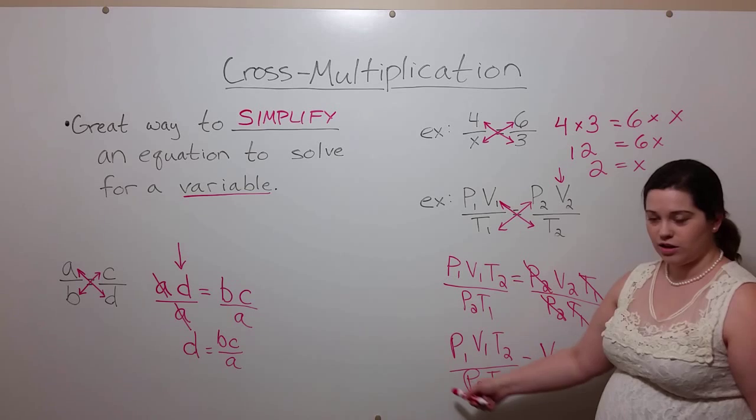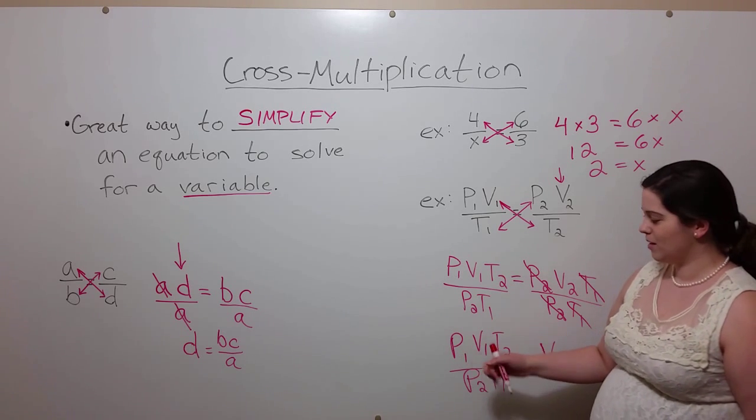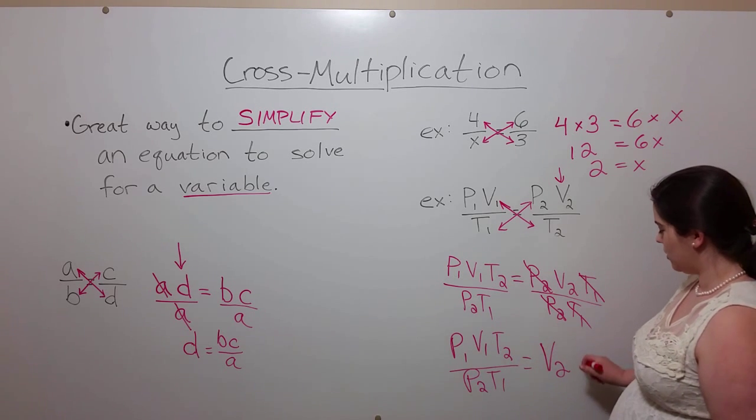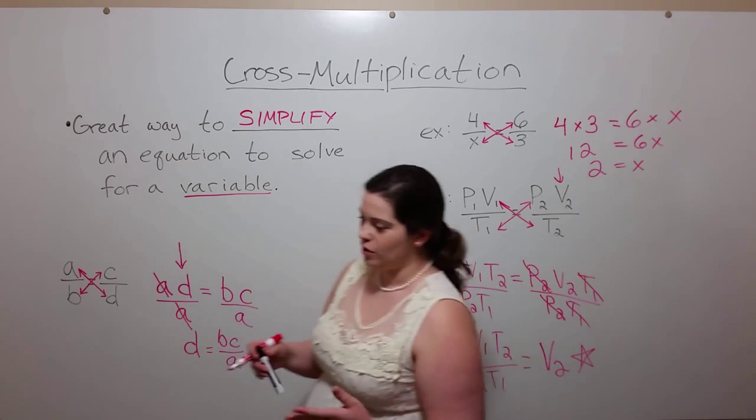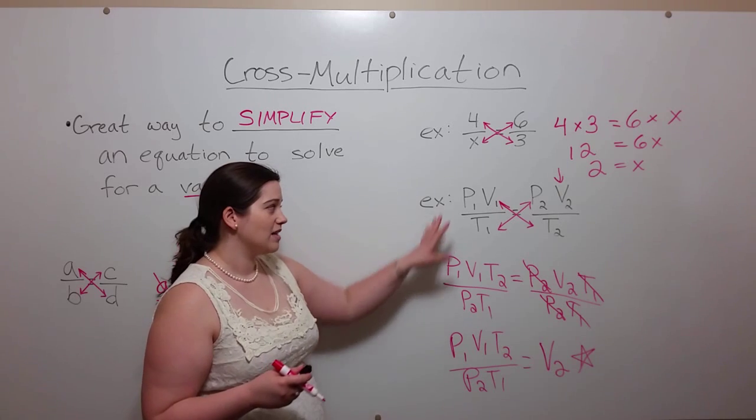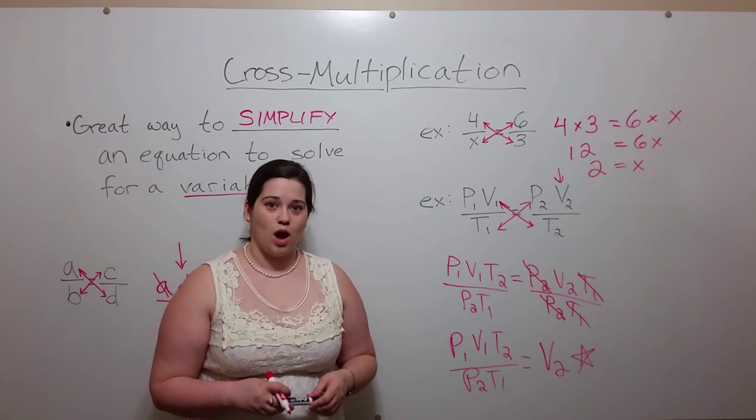Remember that all of these values you would be given, so you can simply plug them in and solve for V2. That's another great example for how cross multiplication simplifies a rather difficult problem.